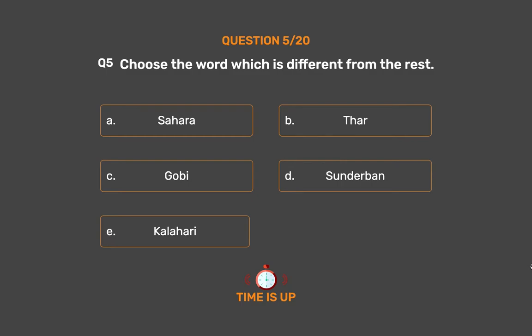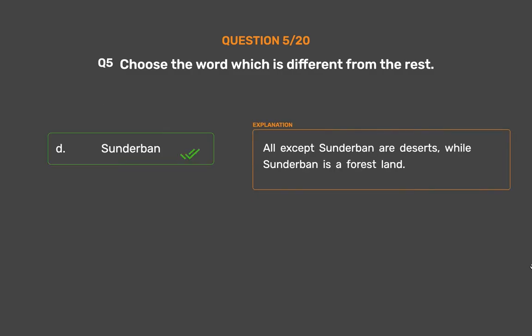The correct answer is Option D: Sundarban. All except Sundarban are deserts, while Sundarban is a forest land.